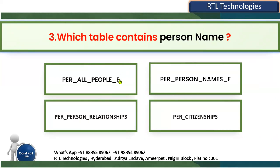The options are: PER_ALL_PEOPLE_F, PER_PERSON_NAMES_F, PER_PERSON_RELATIONSHIPS, or PER_CITIZENSHIP. The answer is PER_PERSON_NAMES_F — this table contains all person names: first name, last name, and full name, along with person IDs. PER_ALL_PEOPLE_F contains worker information but not names directly; you find the person ID there and then look up the corresponding name. So PER_PERSON_NAMES_F is the table that holds the names.